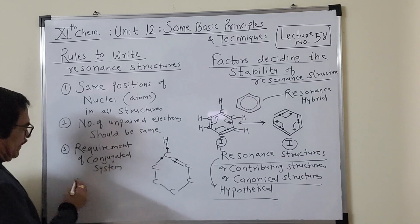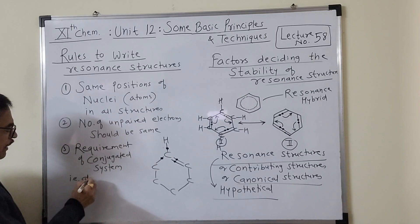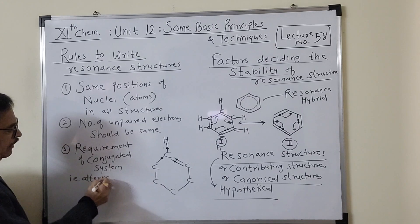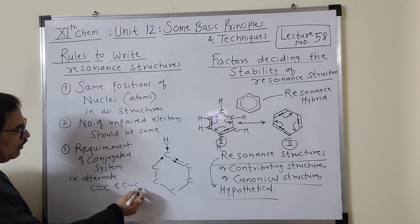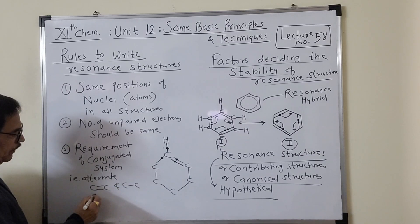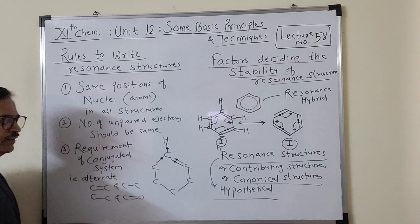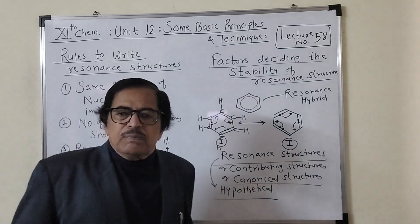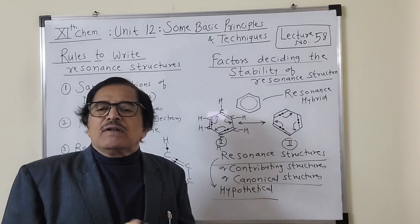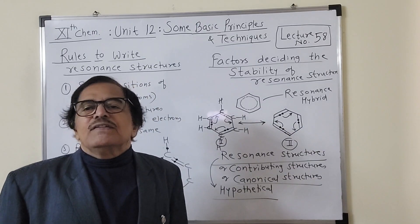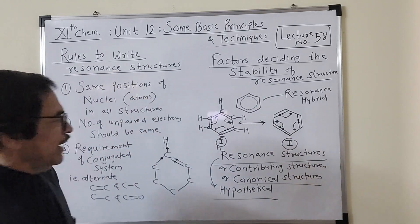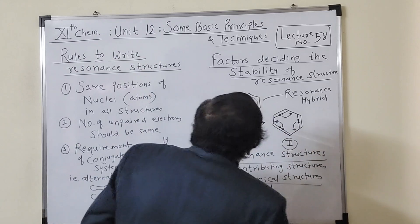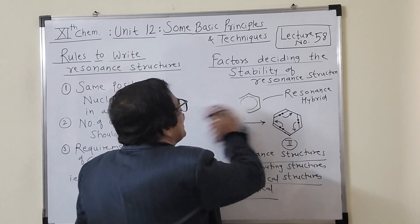The conjugated system requirement means alternate C=C and C–C, or C–C and C=O bonds — that is, a double bond–single bond–double bond–single bond pattern. Only then is resonance possible; otherwise it is not.